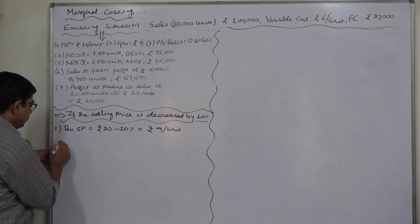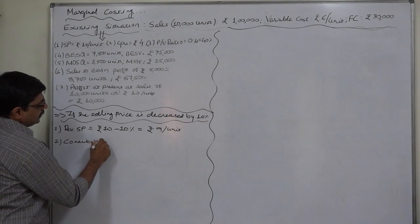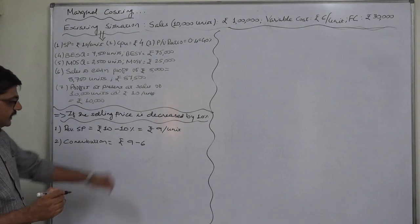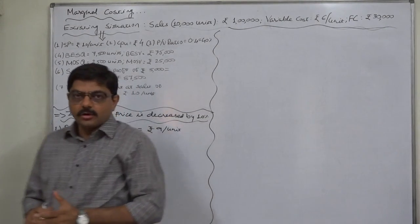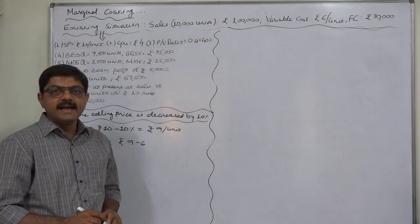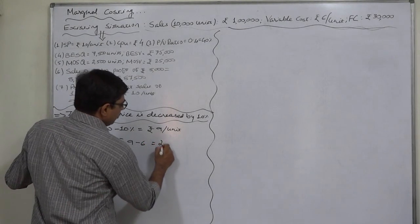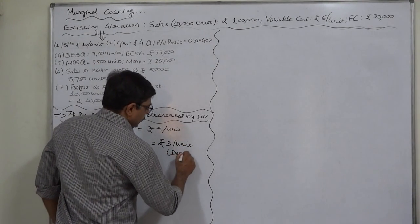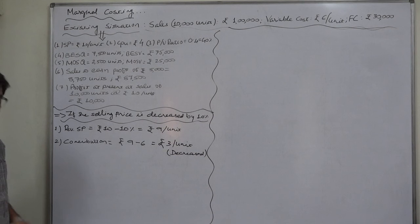The first effect of this decision will be on contribution per unit. Contribution will now be rupee 9 minus 6 — that is, selling price minus variable cost. The revised selling price is 9, but there will be no effect of the change in selling price on variable cost, because variable cost changes only as the effect of external forces. So the contribution will now be rupee 3 per unit, against rupee 4 at present — it has decreased. The first effect of a change in selling price is always on contribution per unit.